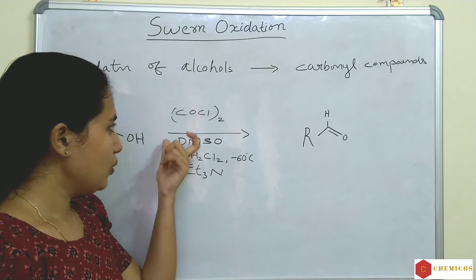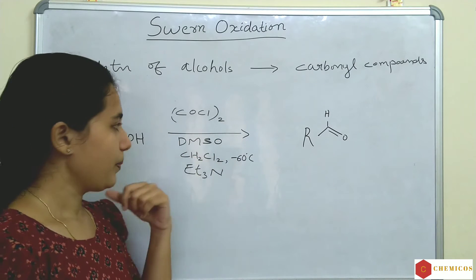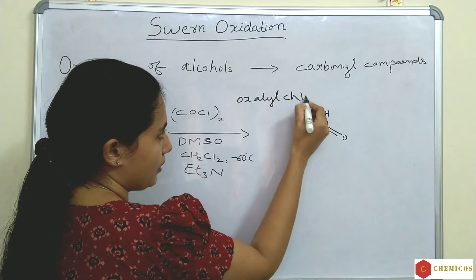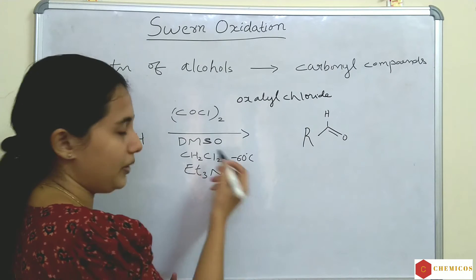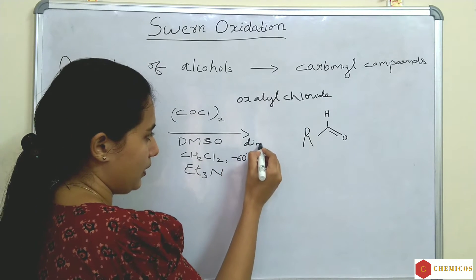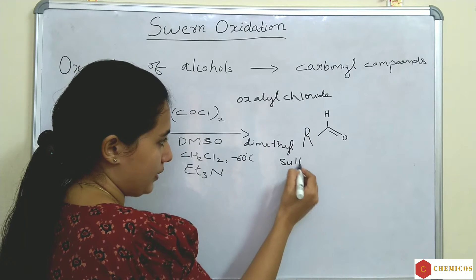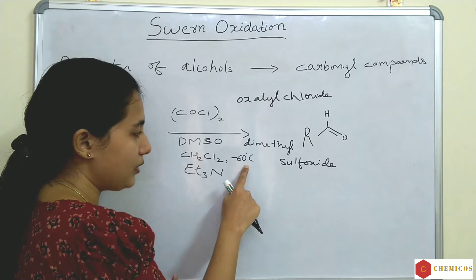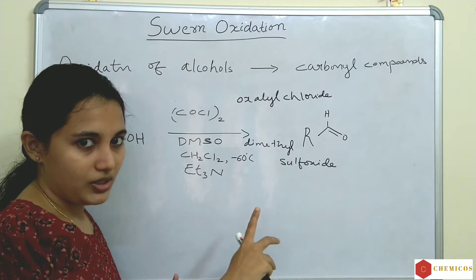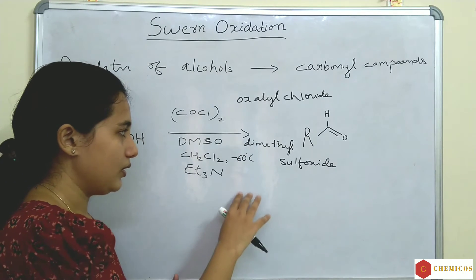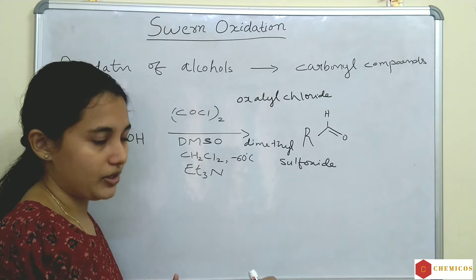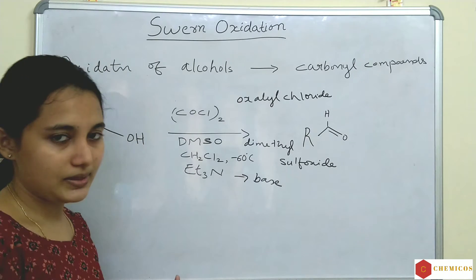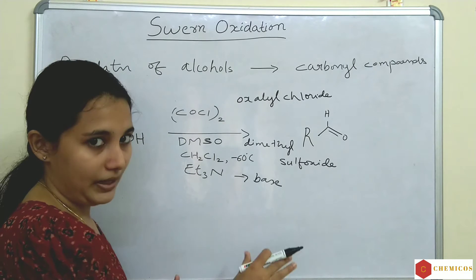The Swern Oxidation reagents are COCl₂ — that is oxalyl chloride — and DMSO, dimethyl sulfoxide, mixed together. The reaction takes place at minus 60 degrees Celsius — a low temperature — along with Et₃N, triethylamine, which acts as a base in this reaction.